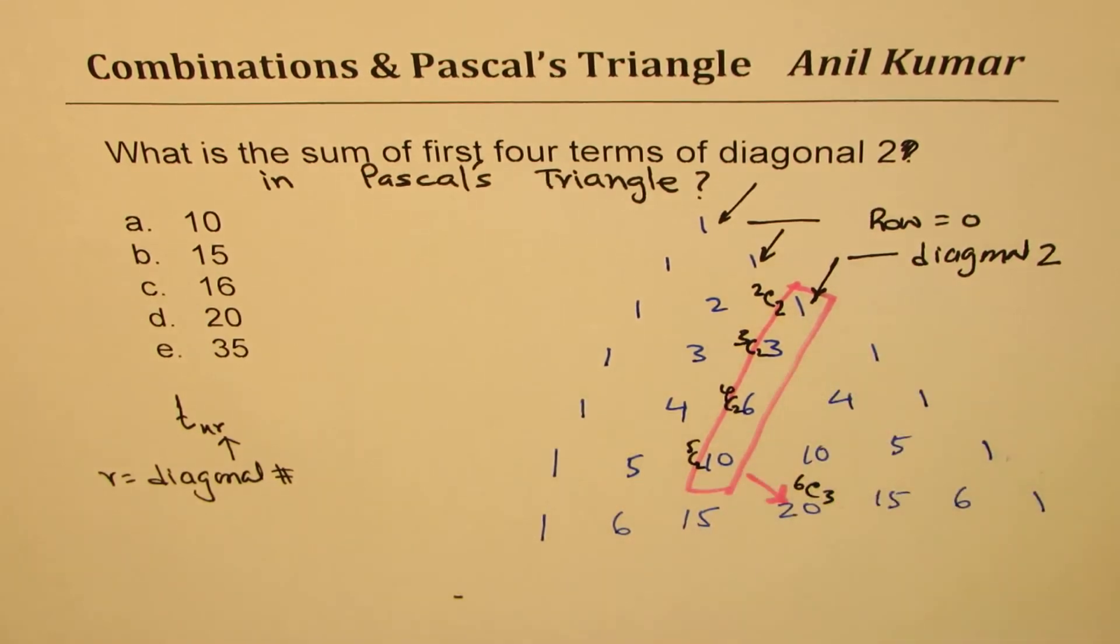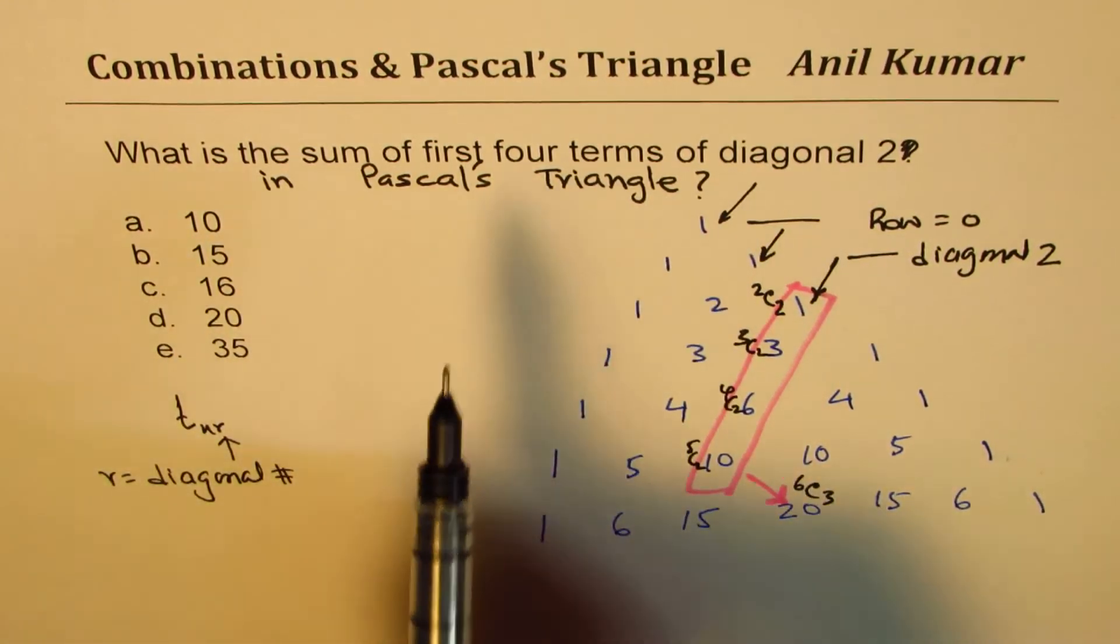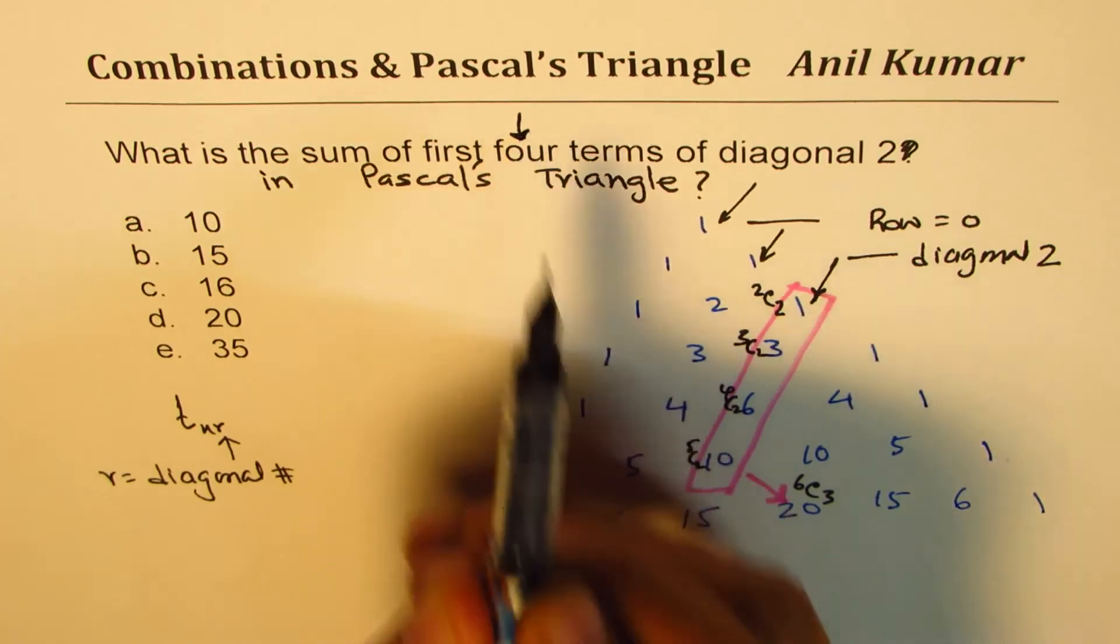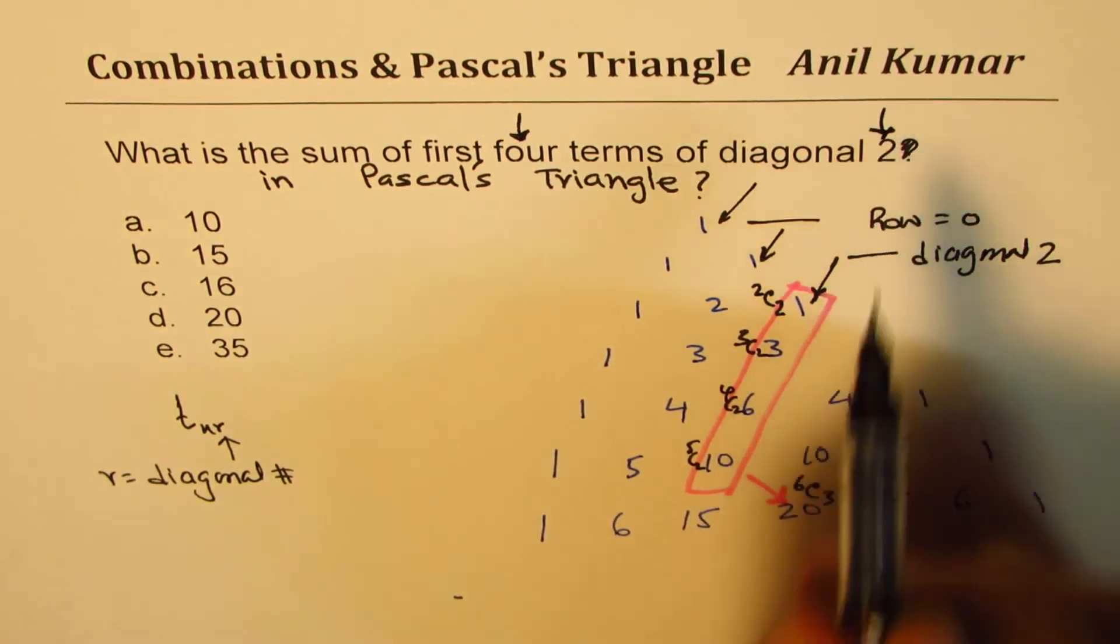So these are the numbers which you have to add to get to the answer. Is it okay? So the answer is, if you know that there are four terms, right, and diagonals are two, correct? There are four terms, so 1, 2, 3, 4 - so 5C2, right?